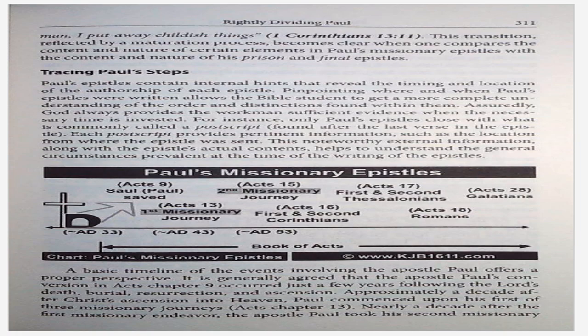Assuredly, God always provides the workman sufficient evidence when the necessary time is invested. For instance, only Paul's epistles closed with what is commonly called a postscript found after the last verse in the epistle. Each postscript provides pertinent information such as the location from where the epistle was sent. This noteworthy external information along with the epistle's actual contents helps to understand the general circumstances prevalent at the time of the writing of the epistles. On page 311, the chart is titled Paul's Missionary Epistles. A basic timeline of the events involving the Apostle Paul offers a proper perspective.